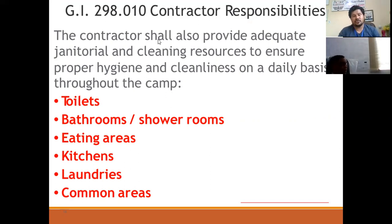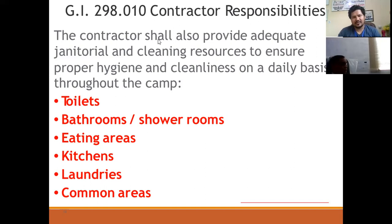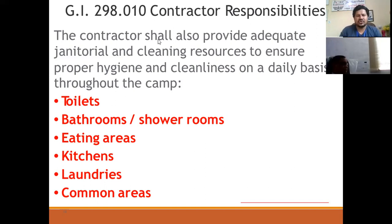For example: the contractor shall provide adequate janitorial and cleaning resources. Imagine if the contractor is not providing the cleaning materials or required resources — or instead of 10 janitors needed, they are just providing one. It's not only human capital; all resources are needed to complete the job effectively so they can ensure proper hygiene and cleanliness on a daily basis throughout the camp, especially in important areas like toilets, bathrooms, shower rooms, eating areas, kitchen, laundry, and common areas.